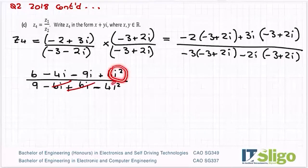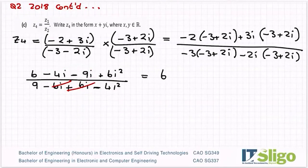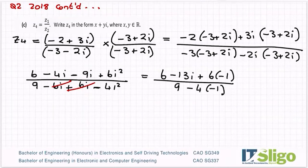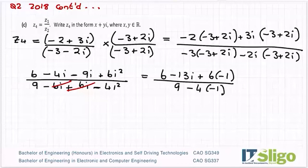Next job, let's sub in our minus 1s for i squared and let's tidy up here. OK. So I have 6 and then I'll have minus 4i minus 9i, minus 13i plus 6 times minus 1. All over 9 minus 4 bracket minus 1. So don't overthink it. Any place there's i squared, put in the minus 1. Keep everything else the same.